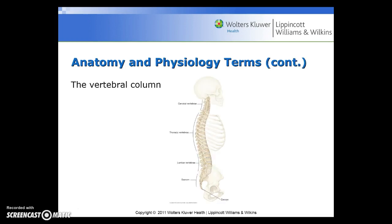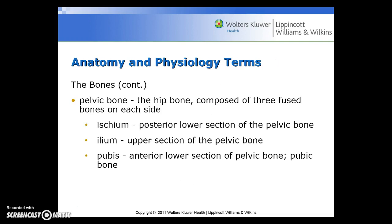Here is a diagram of the vertebral column. The pelvic bone, or hip bone, is composed of three fused bones on each side: the ischium, which is the posterior lower section of the pelvic bone; the ilium, the upper section of the pelvic bone; and the pubis, which is the anterior lower section of the pelvic bone, or the pubic bone.